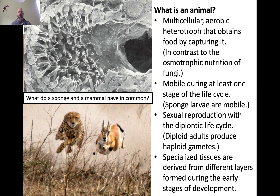Animals are always mobile during at least one stage of their life cycle. So even though sponges don't move — they just kind of sit there — sponge larvae are actually free-swimming and can move. All animals reproduce sexually. There are interesting exceptions, as always in biology, but those exceptions prove the rule, as they evolved from sexual ancestors even if they don't have much sexual reproduction now.